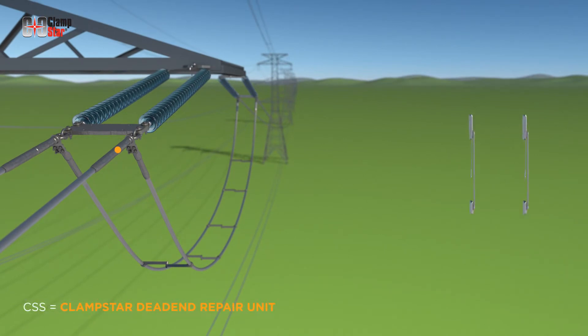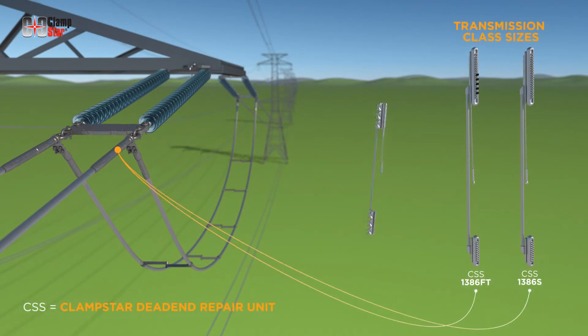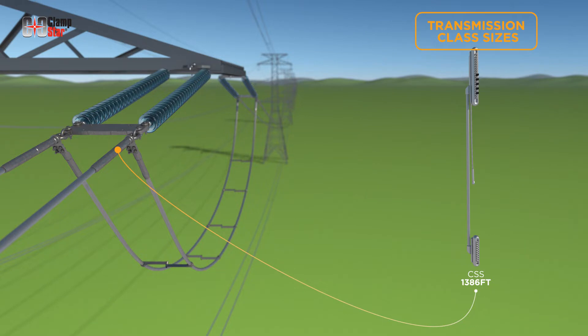ClampStar dead-end units are available in transmission and distribution classifications, which are offered in either standard or full-tension versions. Standard versions are equipped with standard torque bolts on each head, and full-tension units are equipped with a combination of standard torque bolts and frusto-conical torque bolts. All ClampStar dead-end repair units will restore the conductor connector system to full-tension. This installation will be done using a transmission class full-tension unit.